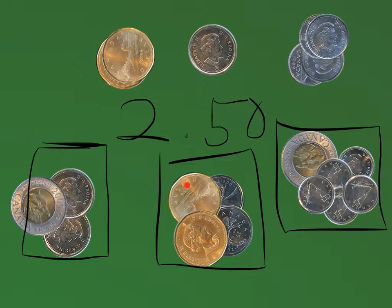So then we have two dollars again, but this time we have all tens. Let's count them: 10, 20, 30, 40, 50. Perfect! Thanks for watching, bye!